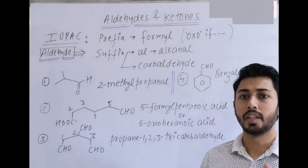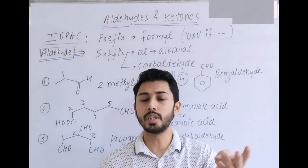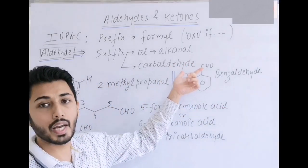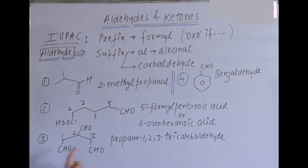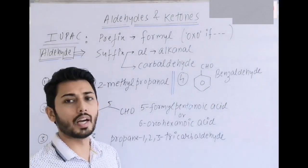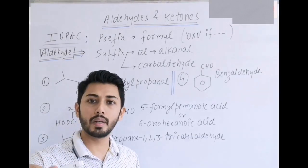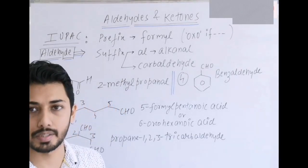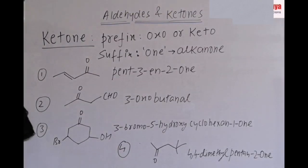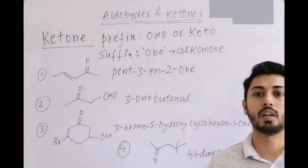If there are two CHO groups, numbering can be done normally; but if there are three or more, always use the 'carbaldehyde' suffix — their carbon does not get a number in the parent chain. An important example is benzaldehyde, which is also named 'benzene carbaldehyde'. The common name benzaldehyde is IUPAC accepted.